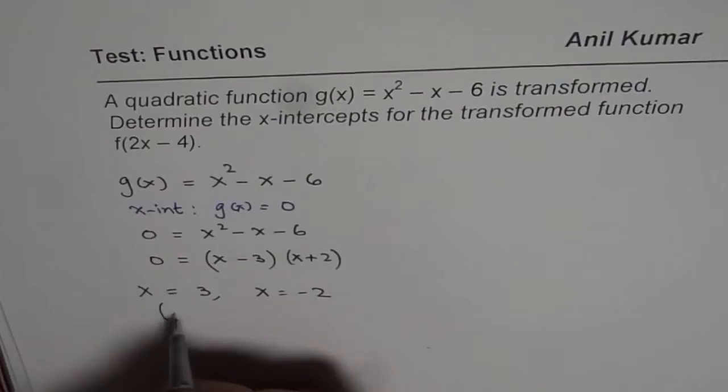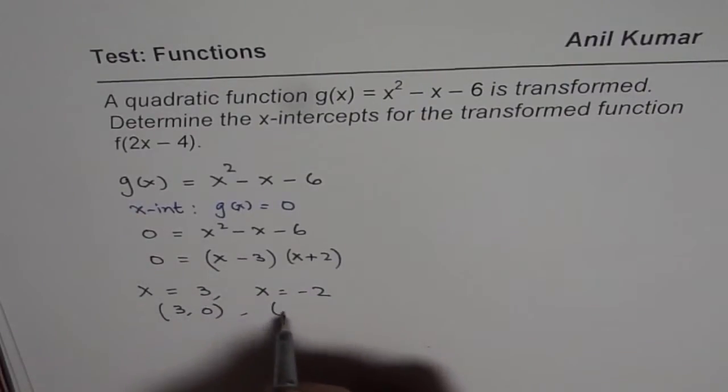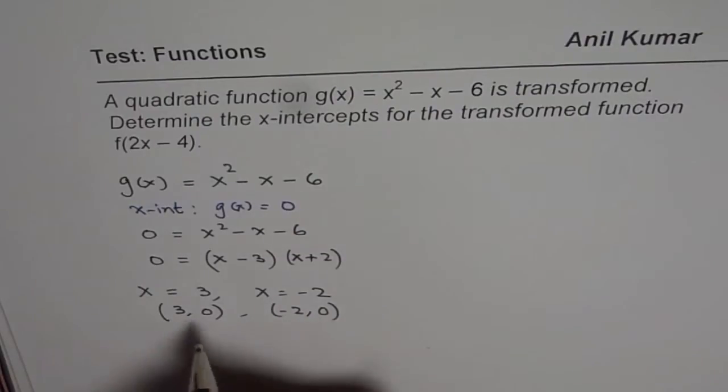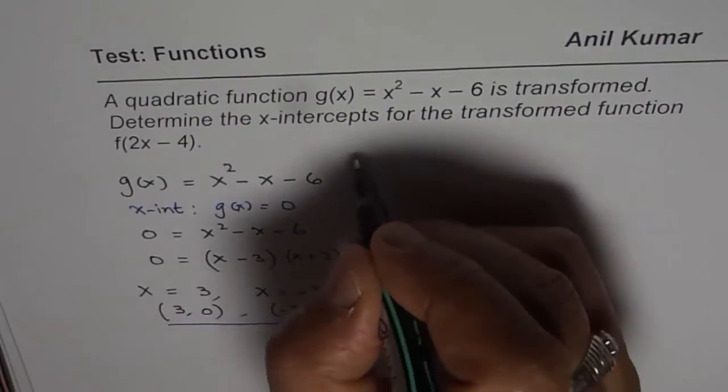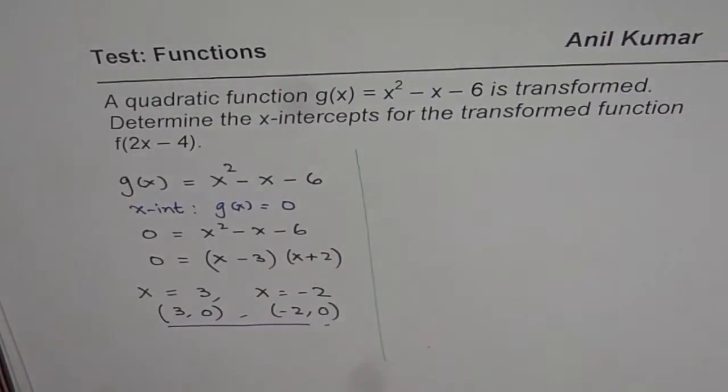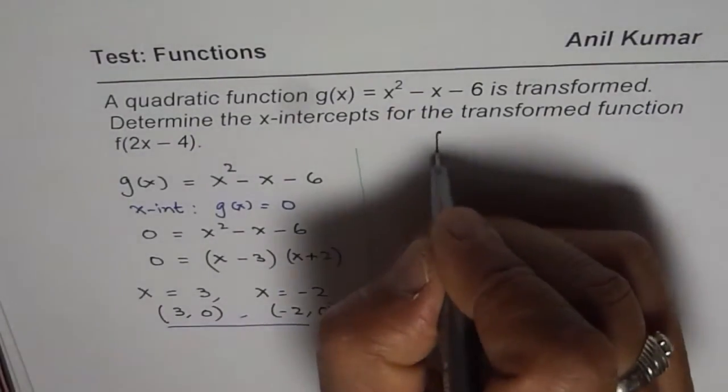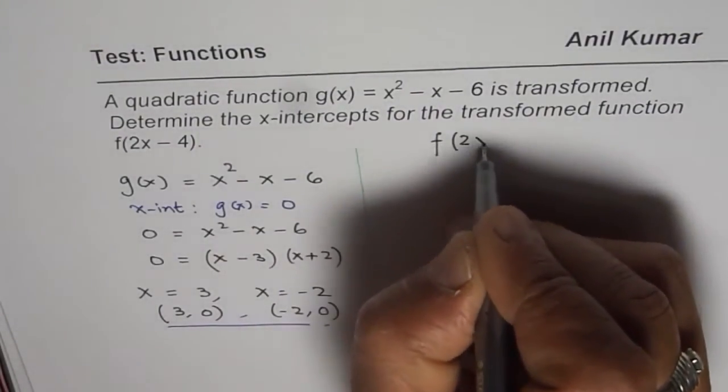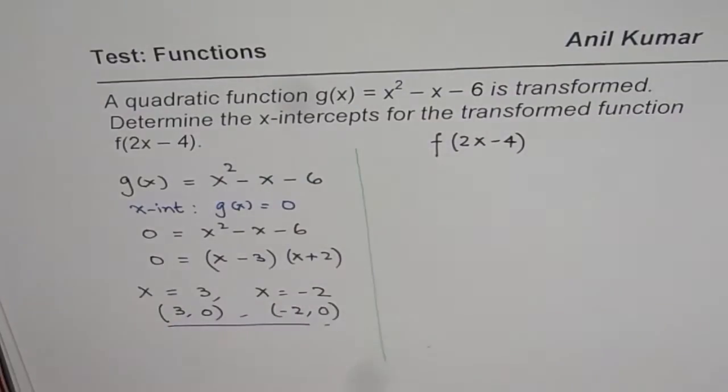We can write these points as (3, 0) and (-2, 0). So these are the x-intercepts of g(x). Now we need to find x-intercepts of the function f(2x - 4). How will we find them?